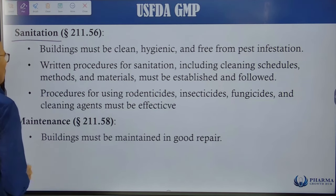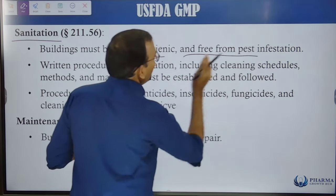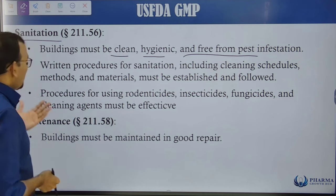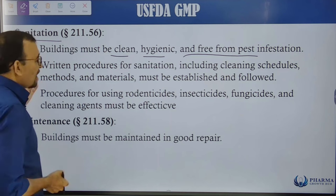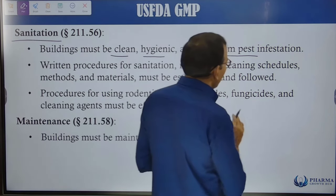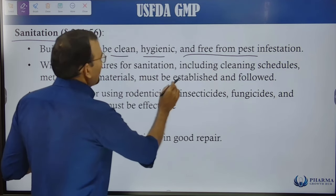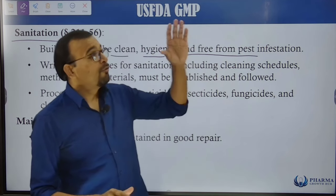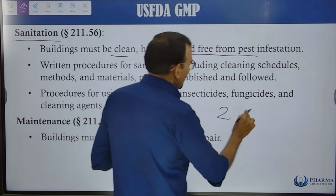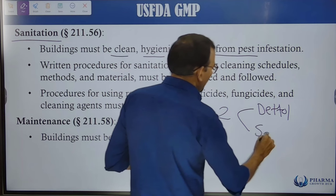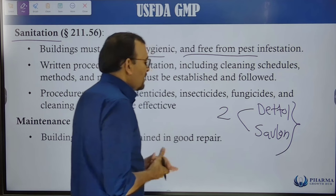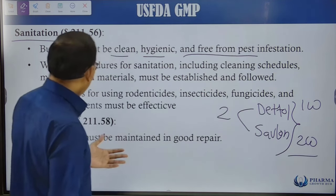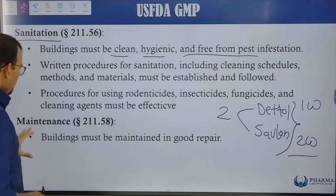Buildings must be cleaned, hygienic, and free from pest infestations. Written procedures for sanitation — including cleaning schedules, methods, and materials — must be established and followed. Two different sanitizing agents are typically alternated week by week, for example one disinfectant in the first week and a different one the second week, to avoid microorganisms developing resistance to the cleaning agents.